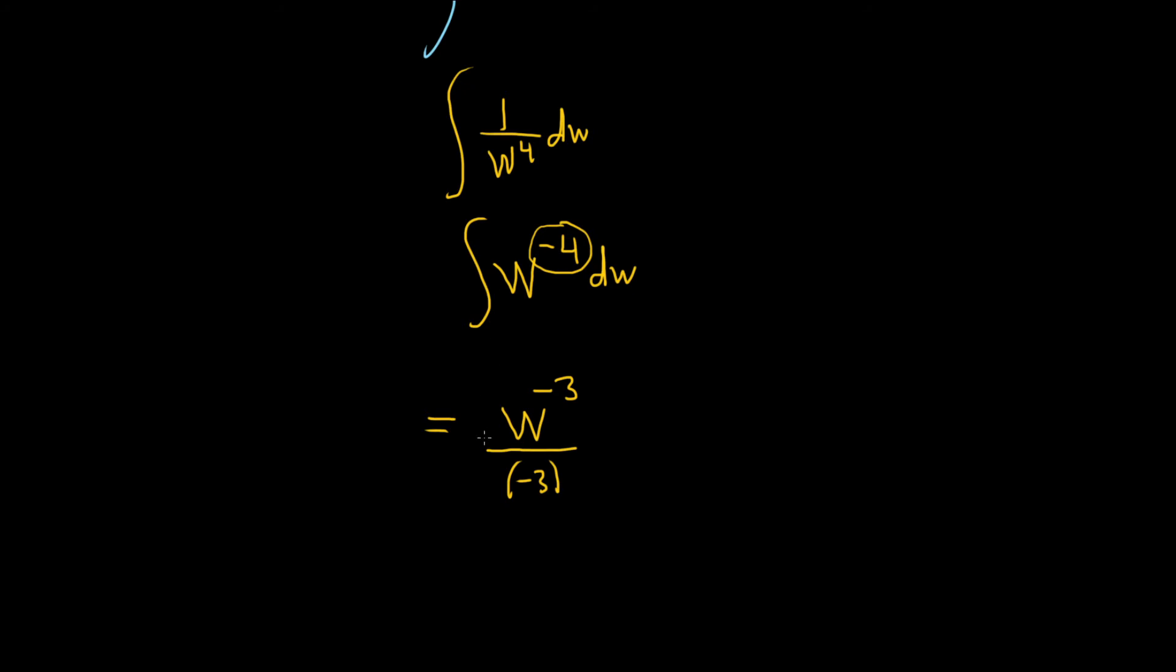Notice I didn't write the integral sign or the dW. That's because we used the power rule. So whenever you use the rule, you basically stop writing the integral sign and the dW. And then you just add 1 and divide by it. Then you're also supposed to put your capital C. That's your constant of integration.